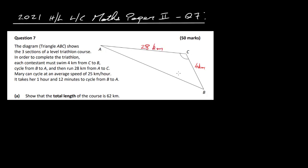Mary can cycle at an average speed of 25 kilometres per hour, and it takes one hour 12 minutes to cycle from B to A, so we can work out that distance as well. We need to show that the total length of the course is 62 kilometres, so we work out the distance from B to A using the speed and time.